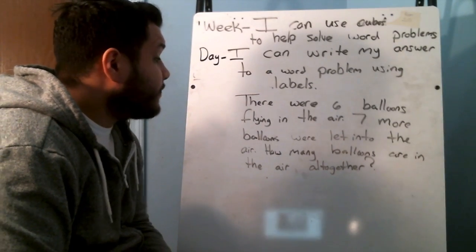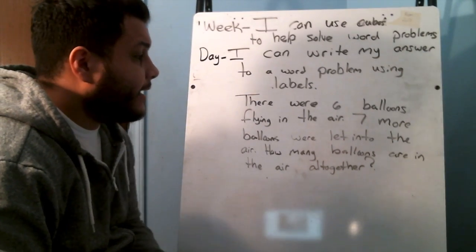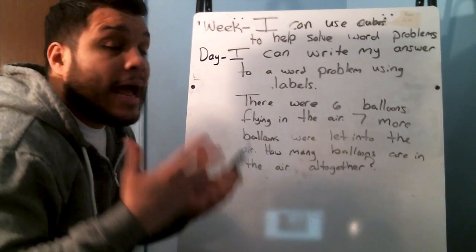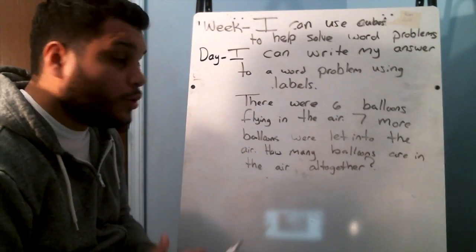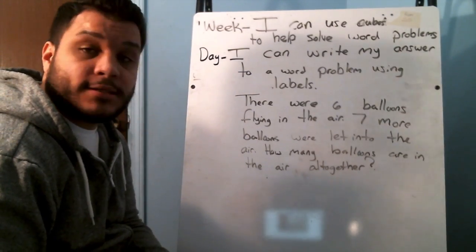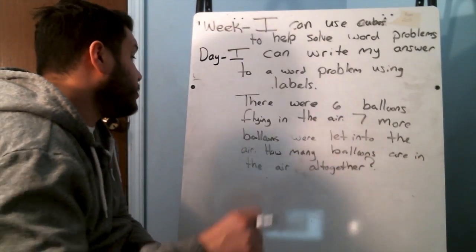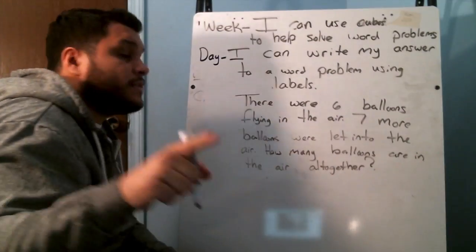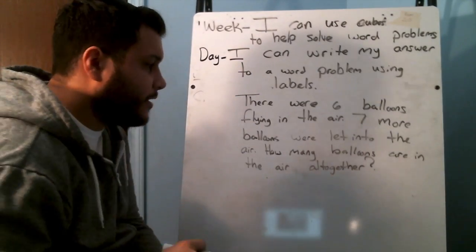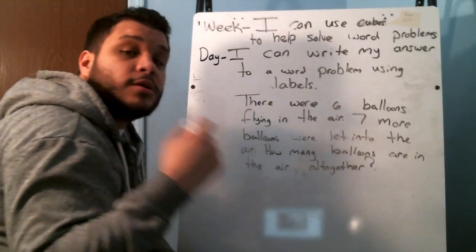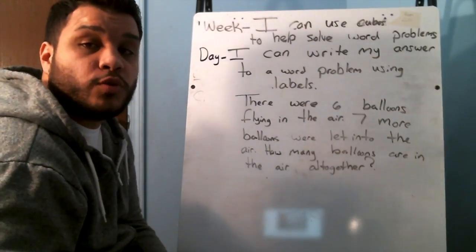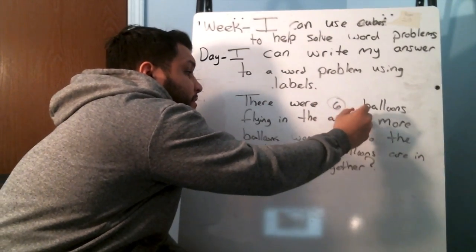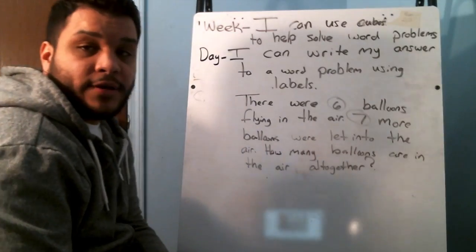There were six balloons flying in the air. Seven more balloons were let into the air. How many balloons are in the air altogether? Our first strategy is CUBES. C stands for — circle the numbers. What are my two numbers? Six and seven.